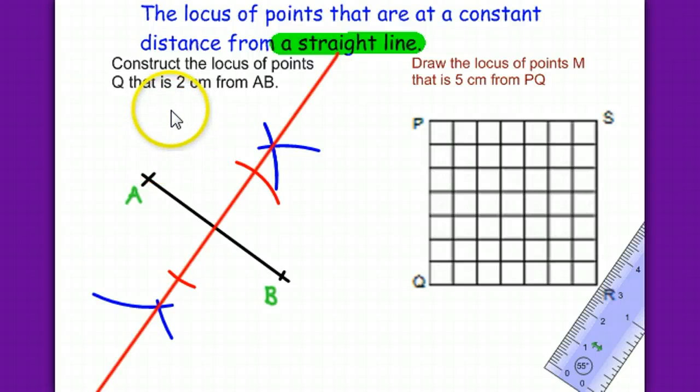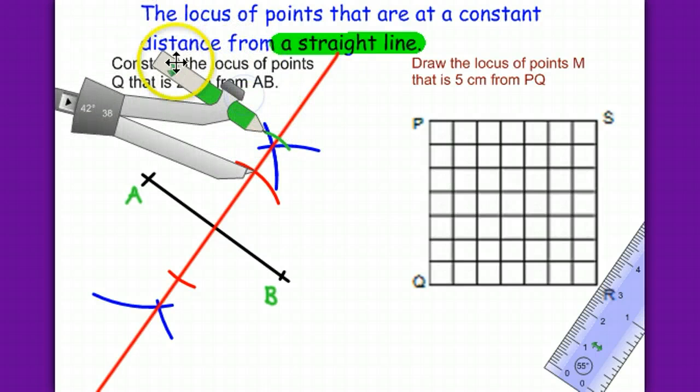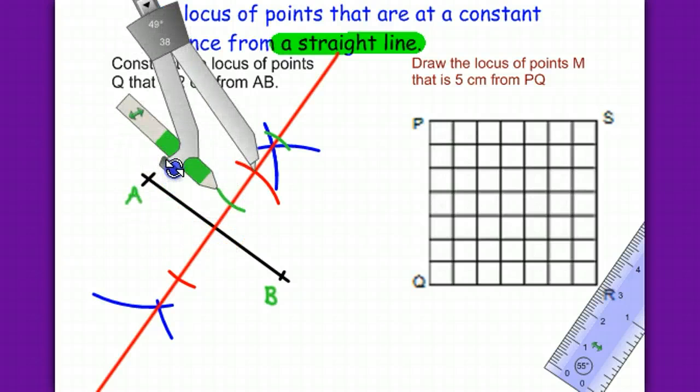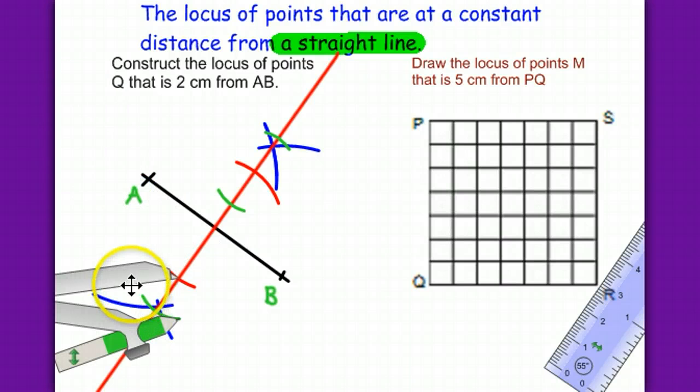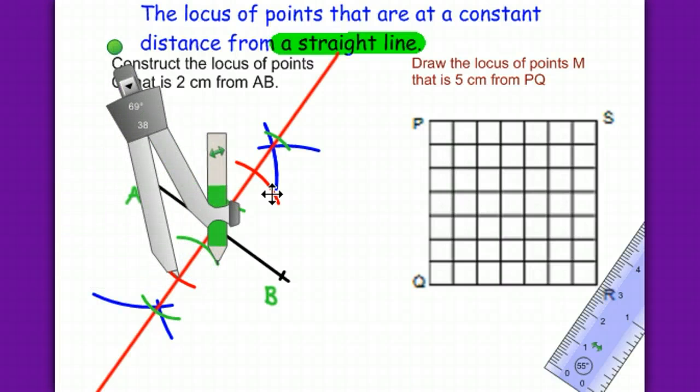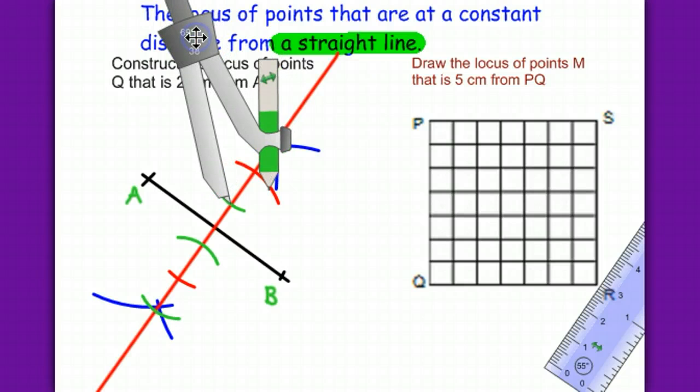Next, we need a perpendicular line right here on this 2cm line. One curve here, and another curve on the other side. One curve on the left, and another one on the right. Move it to the curve, the green curve we just made.